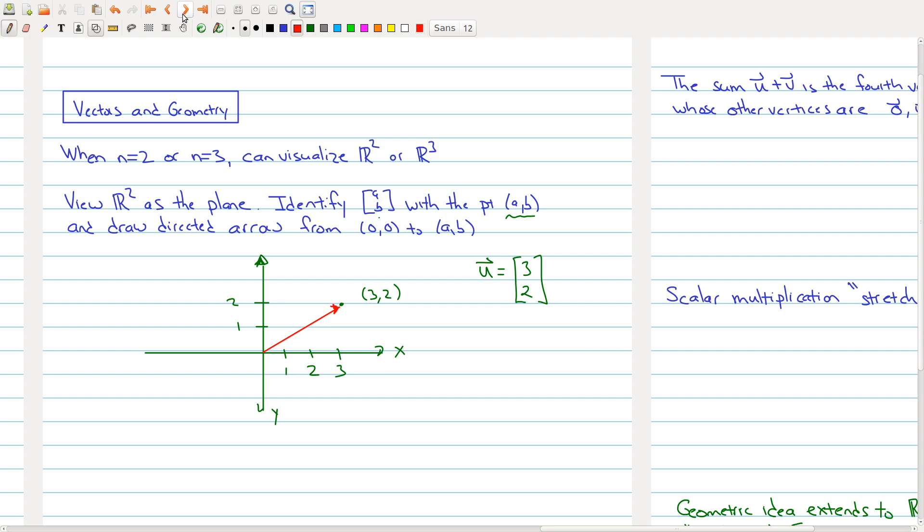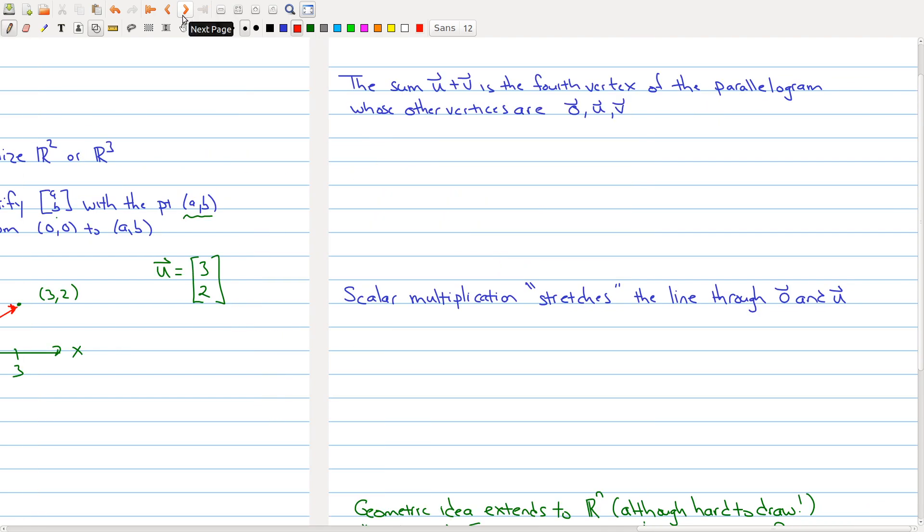Now we saw that we have some operations on our vector. We had vector addition and we had scalar multiplication. And both of these operations have a geometric interpretation. So what is the sum of two vectors? Well, the sum of two vectors is going to be the fourth vertex of the parallelogram whose other vertices are the origin and the endpoint of the vector u and the endpoint of the vector v. So let's draw some pictures so you can see what's going on here.